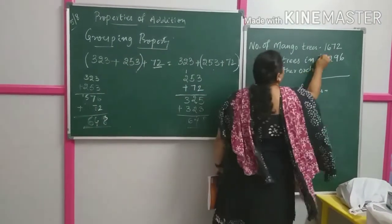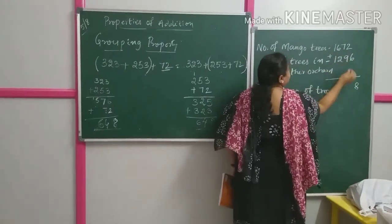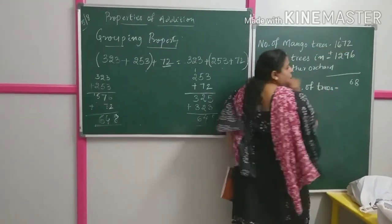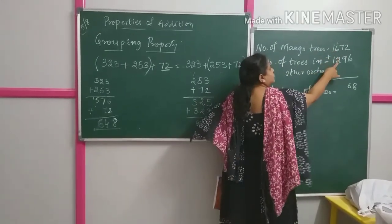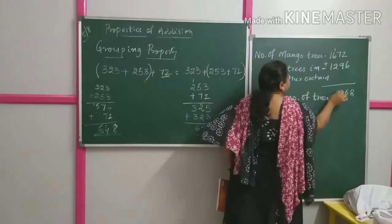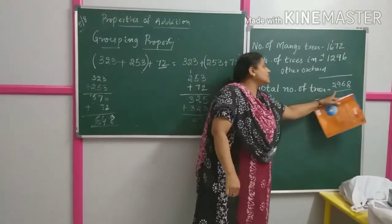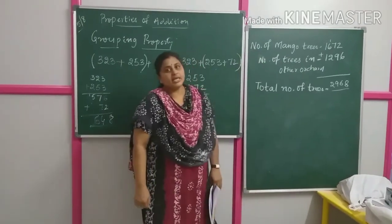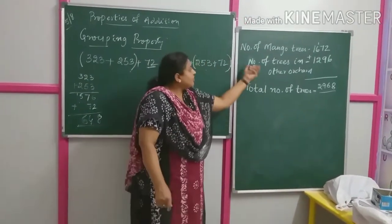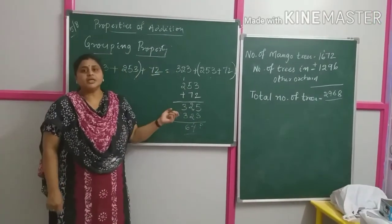Adding the two: 6 plus 2 is 8, 9 plus 7 is 16 — carry over 1 — 6 plus 2 plus 1 is 9, and 1 plus 1 is 2. Total number of trees is 2,968. For word problems, frame the statement and solve the problems in your classwork notebook.